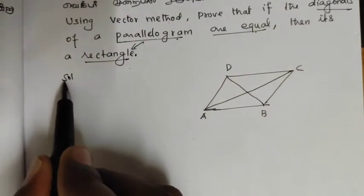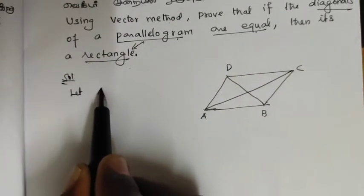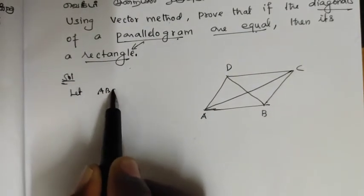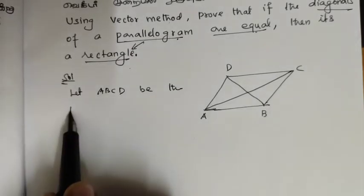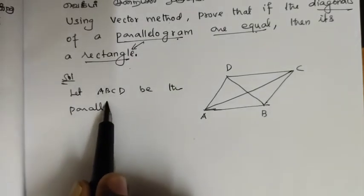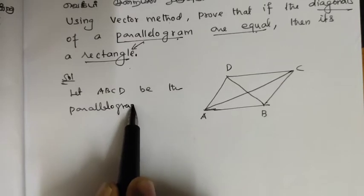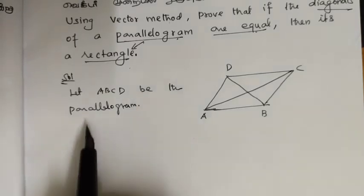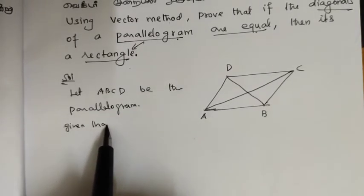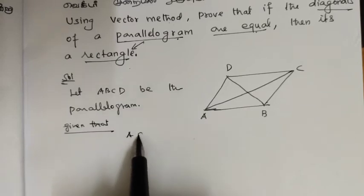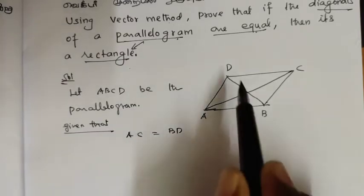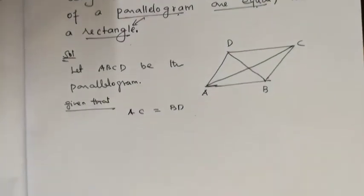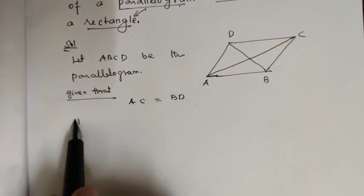So, let a, b, c, d be a parallelogram. ABCD is the same one. Given that, AC is equal to BD. AC is equal to BD. This is the given.